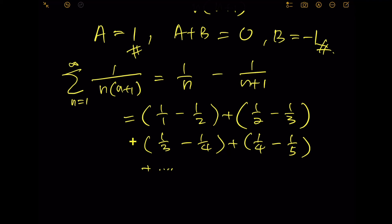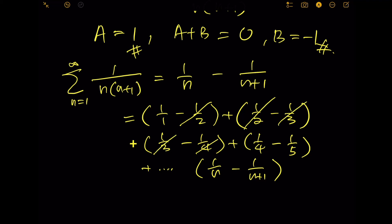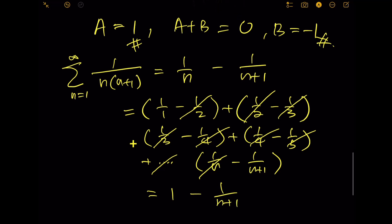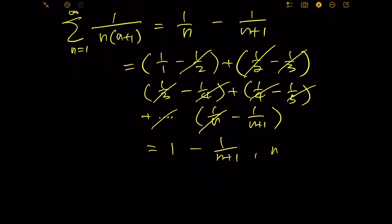Continuing until the last term, it is clear that negative 1 over 2 cancels with positive 1 over 2, negative 1 over 3 cancels with 1 over 3, and all intermediate terms cancel. Only the first and last terms remain: 1 minus 1 over n plus 1. As n goes to infinity, 1 over n plus 1 goes to 0, leaving only 1.